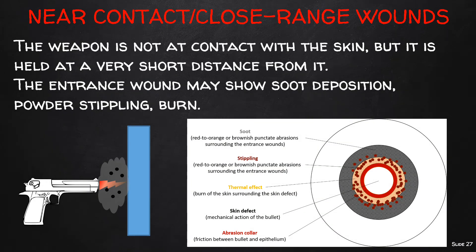In near-contact or close-contact range wounds, the weapon is not touching the skin but is held at a very short distance. After discharge, the smoke and unburned propellant particles come out from the weapon and hit the skin, creating powder stippling. The entrance wound is usually surrounded by soot deposition and powder stippling and shows the results of the thermal effect.